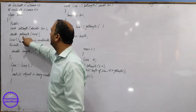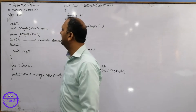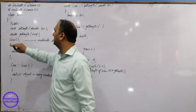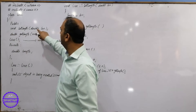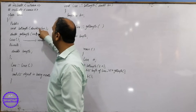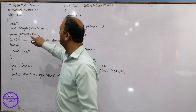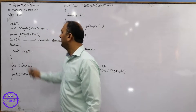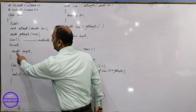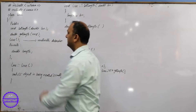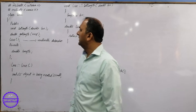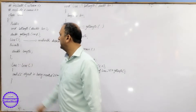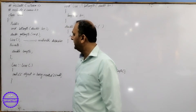The name is set length, its name is get length, its return data type is void, its return data type is double. It has a parameter and double data. Private, we have double length. This is a private data member and data type.